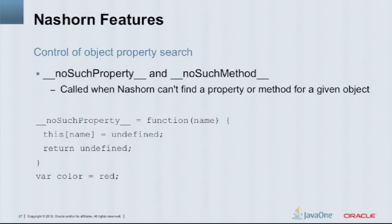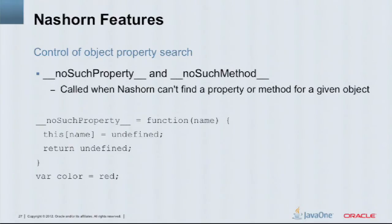One aspect of Dynalink is the no-such-property and no-such-method implementation. We can define a special property within the global space — or any prototype — where instead of giving an error when a property can't be found, we handle it a specific way. For example, in the global space we can define a function that sets the property to undefined and returns undefined, so you'll never get an error if the property doesn't exist. It'll just always return undefined. This gives you that kind of flexibility.